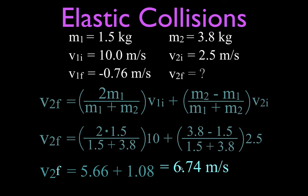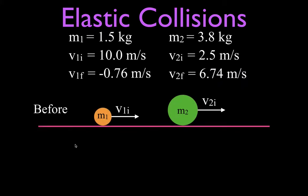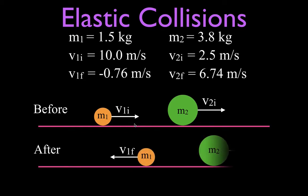All right so those are the values that we got. We got a final velocity for mass number one of minus 0.76 meters per second and a final velocity for mass number two of 6.74 meters per second. This is the initial picture we had and why don't we just draw a final picture. So this one is still moving to the right, it's moving faster, and this one because this is a negative sign, 0.76 meters per second, mass number one is now moving to the left.